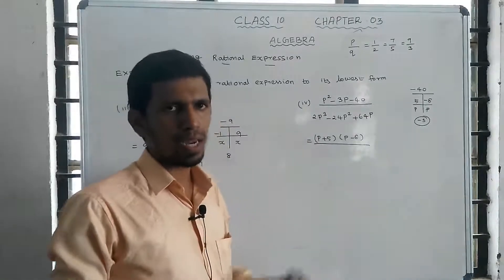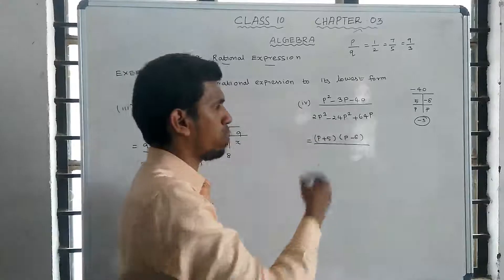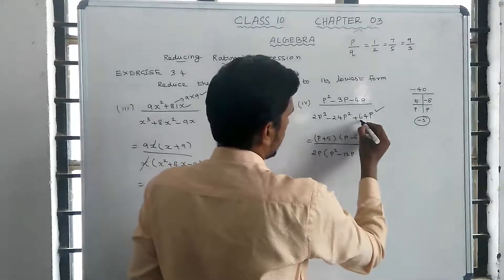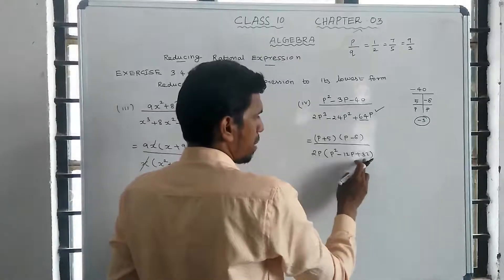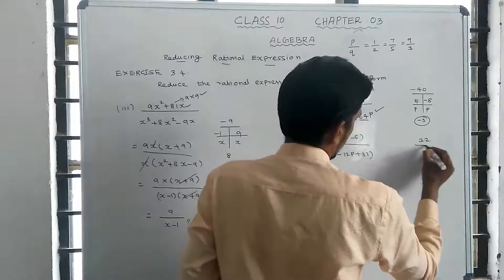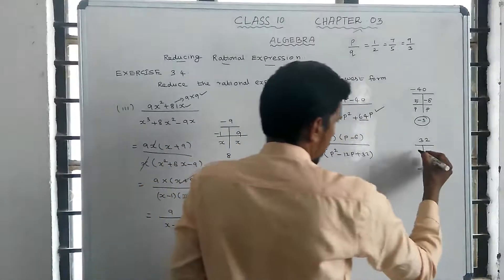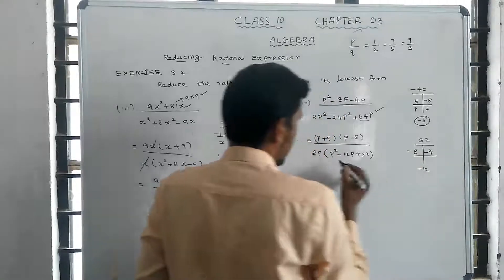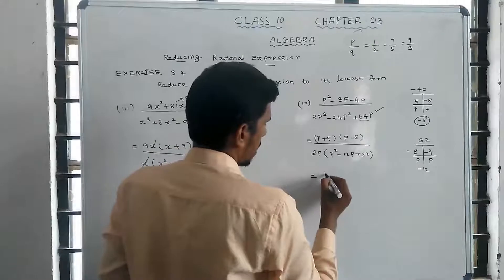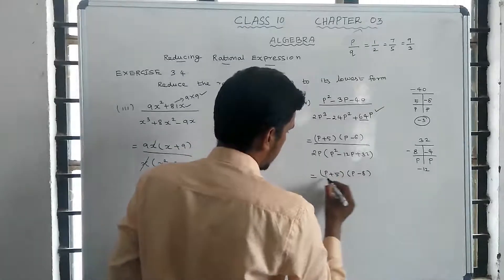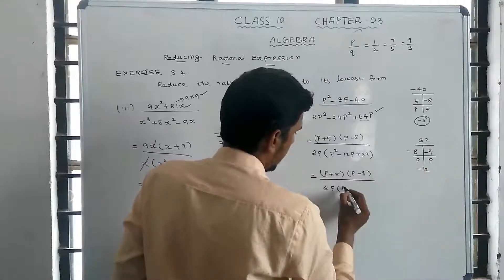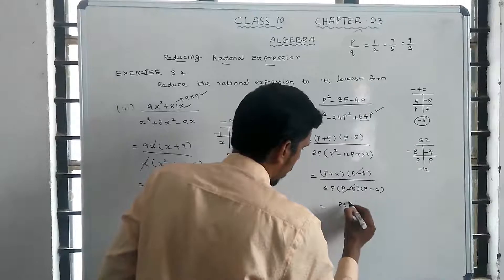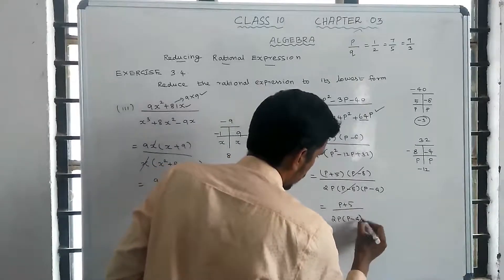The denominator 2p cubed minus 24p squared plus 64p factors as 2p times p squared minus 12p plus 32, which is 2p times p minus 4 times p minus 8. So the expression becomes p plus 5 times p minus 8 divided by 2p times p minus 4 times p minus 8. Cancel p minus 8, and the result is p plus 5 divided by 2p times p minus 4.